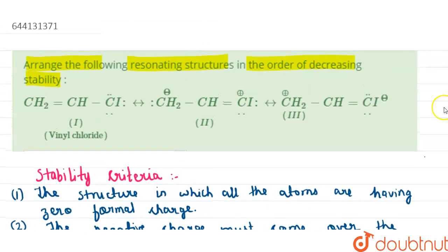let us analyze the structures. In the first structure, if we look, we can see that there is no formal charges on any of the atoms present, neither on carbon nor on chlorine. So our first structure according to stability criteria will be most stable.